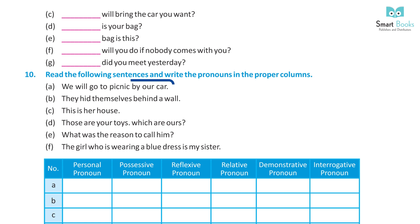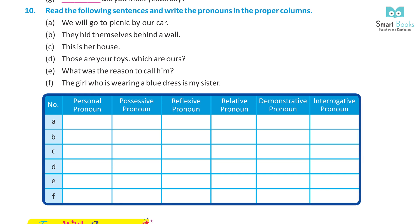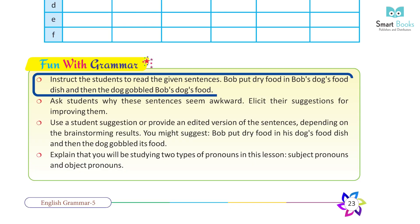Read the following sentences and write the pronouns in the proper column. A: We will go to picnic by our car — personal pronoun: we. B: They hid themselves behind a wall — personal pronoun: they; reflexive pronoun: themselves. C: This is her house — demonstrative pronoun: this. D: Those are your toys, which are ours — possessive pronoun: ours. E: What was the reason to call him — personal pronoun: him; interrogative pronoun: what. F: The girl who is wearing a blue dress is my sister — relative pronoun: who.